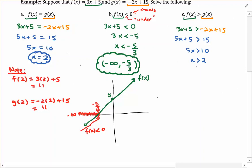In interval notation, that would be parenthesis 2, comma, infinity. So again, we have infinitely many solutions. In particular, the values of x that satisfy the inequality are those strictly between 2 and positive infinity.